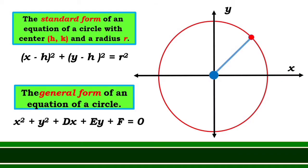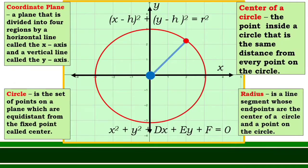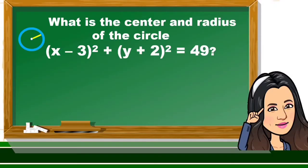Let us also look back on how we can determine the center and radius of a circle given an equation. Example: what is the center and radius of the circle? The square of the quantity x minus 3 plus the square of the quantity y plus 2 is equal to 49. How do we solve this?